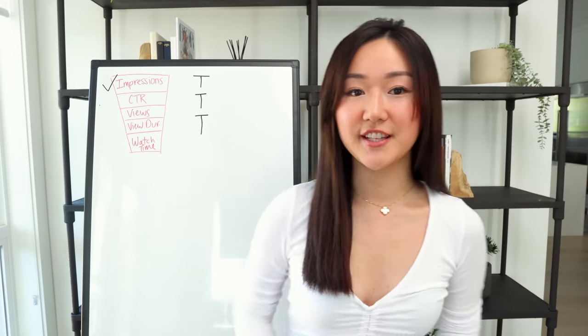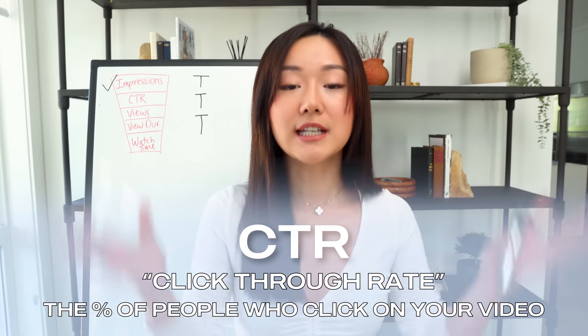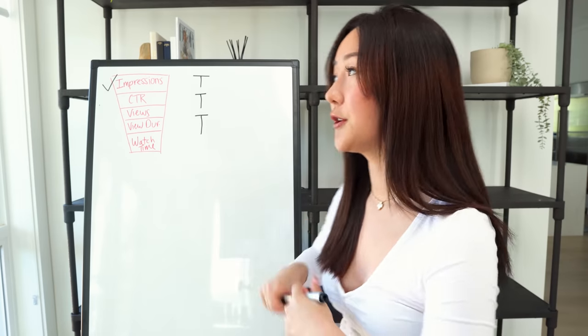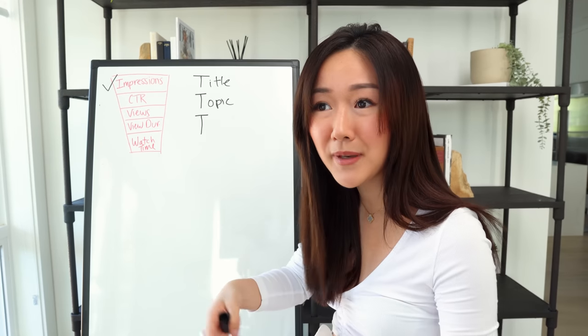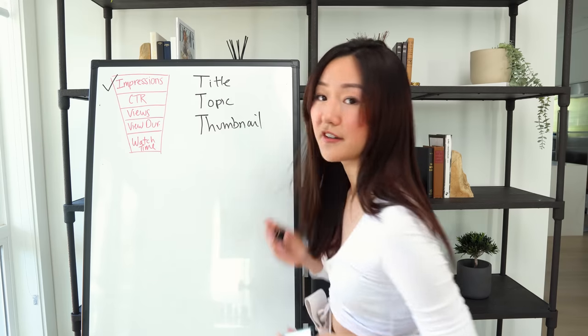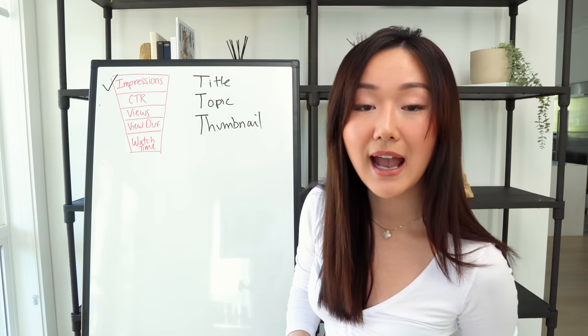Now let's move down the funnel and talk about CTR — click-through rate. Of all the impressions you're getting on your YouTube channel, what percentage of people are actually clicking on your video? That is what click-through rate tells you. What contributes to click-through rate? I have three T's: the first is your title — is it engaging enough for someone to want to click? The second is the topic itself — is it interesting enough for people to want to click? And the last one is thumbnail — whether or not people are captivated by the image associated with that video. These are the three levers you can pull depending on what your click-through rate actually is.